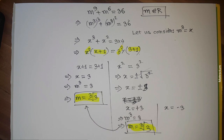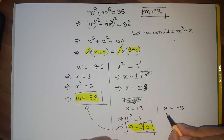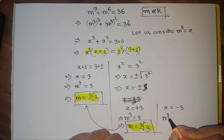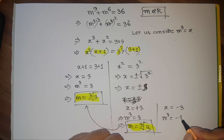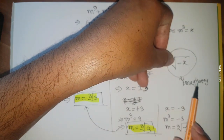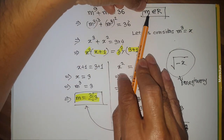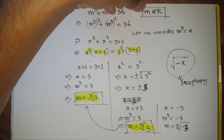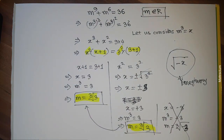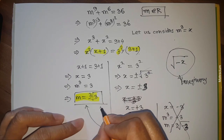For the third case, x = -3 gives m³ = -3, so m = ∛(-3). However, the cube root of a negative number behaves like a square root of a negative number — it produces an imaginary number, which doesn't satisfy our condition that m must be real. Therefore, the only valid solution is m = ∛3.